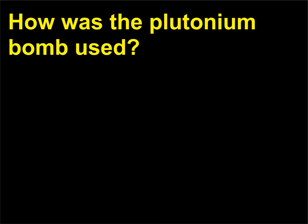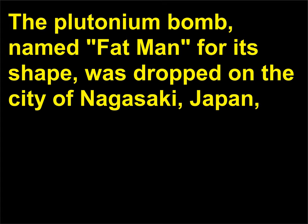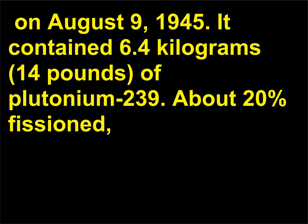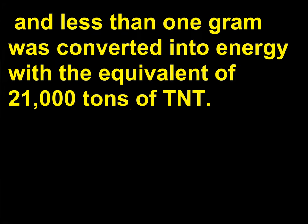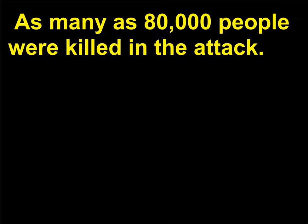How was the plutonium bomb used? The plutonium bomb, named Fat Man for its shape, was dropped on the city of Nagasaki, Japan, on August 9, 1945. It contained 6.4 kg of plutonium-239 — about 20% fissionable — and less than one gram was converted into energy, with the equivalent of 21,000 tons of TNT. As many as 80,000 people were killed in the attack.